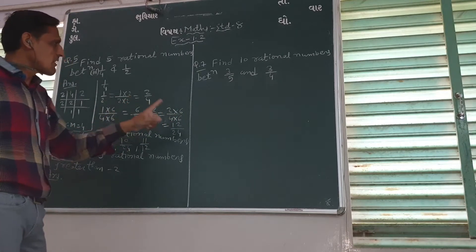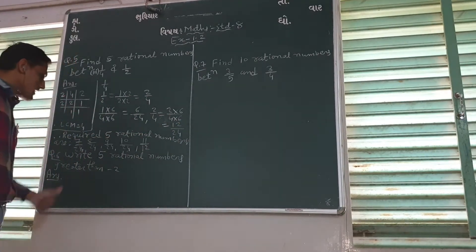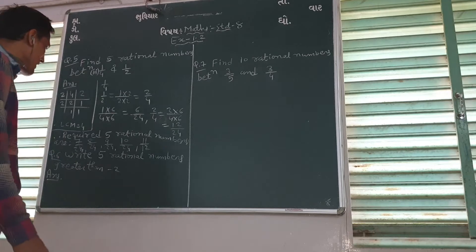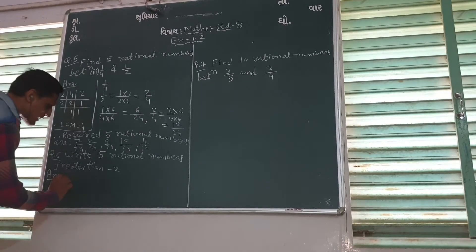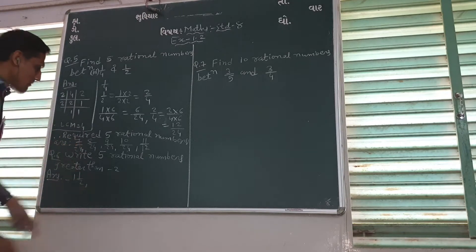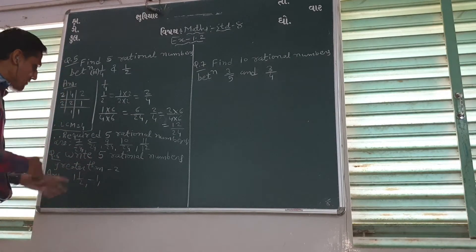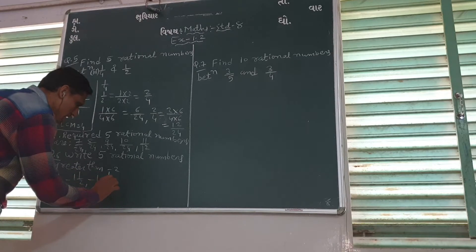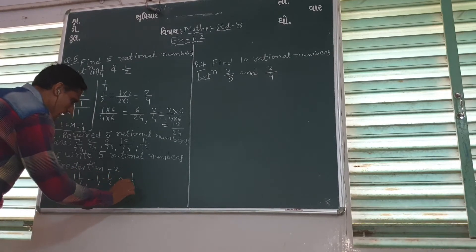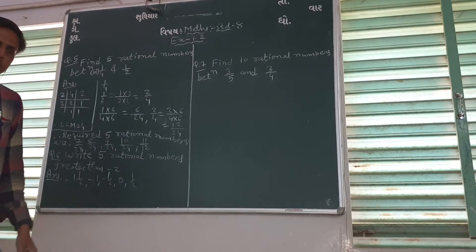Between 6/24 and 12/24 we have 5 rational numbers. Now write 5 rational numbers greater than minus 2. So we can write: minus 1 and a half, then minus 1, then minus a half, then 0, then a half. How many are there? 5.